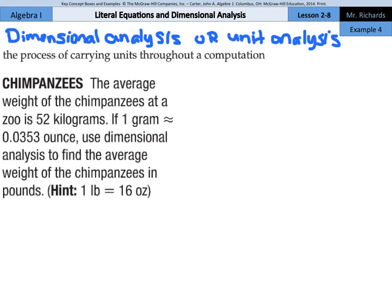And so now with chimpanzees, the average weight of the chimpanzee at a zoo is 52 kilograms. If one gram is approximately equal to 0.0353 ounces, use dimensional analysis to find the average weight of the chimpanzees in pounds. And your hint, one pound is equal to 16 ounces. Now, I like to set up my dimensional analysis problems using this long bar. And the way this ends up working is I'll put what I know, 52 kilograms to start on top here.